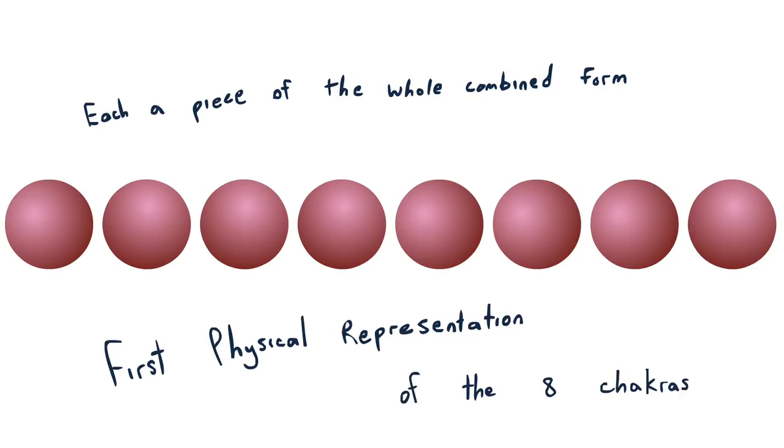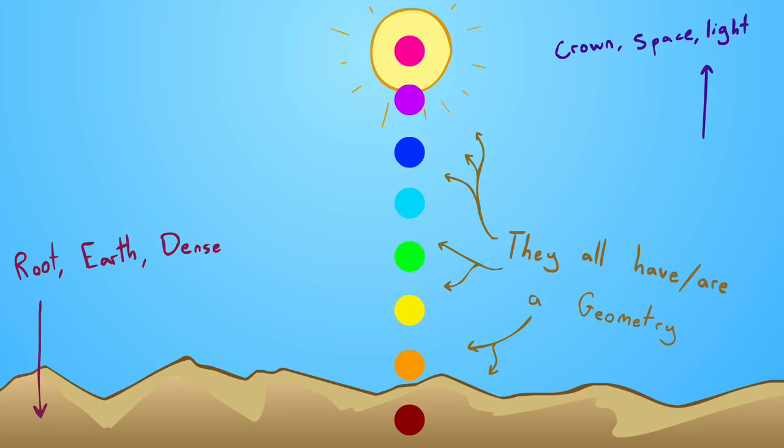These eight spheres become the first physical representation of the complete eight chakra system, which from root to root connects the physical energy of the earth through the body to the higher awareness of the unified field and its infinite connections to everything.